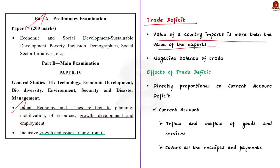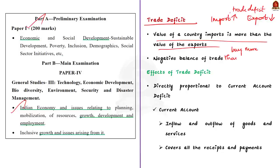That's what happened in April as well — the import bill increased due to rising global oil prices and increased coal imports. A trade deficit means a country is buying more goods and services than it is selling. This condition is called the negative balance of trade. Remember: a country with a trade deficit has spent more money than it has made in international trade with the rest of the world.